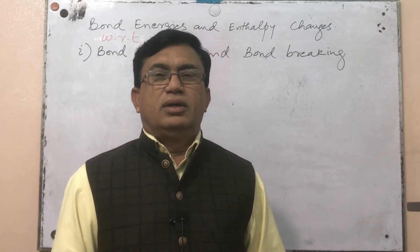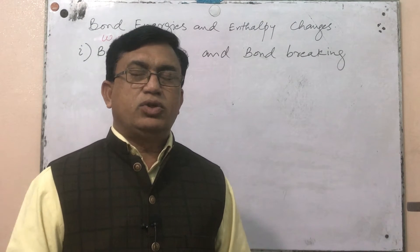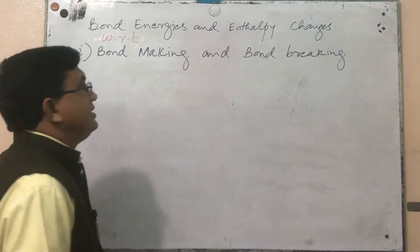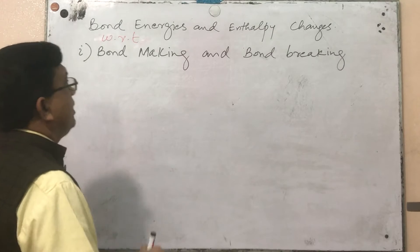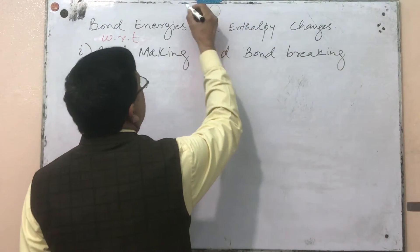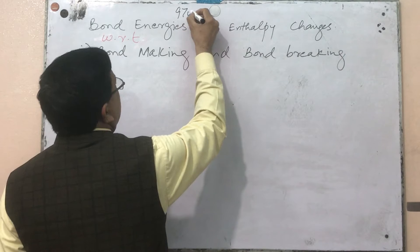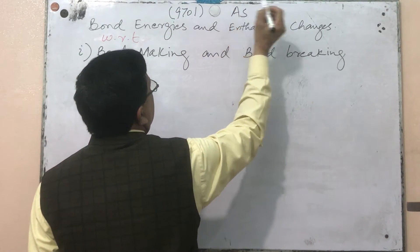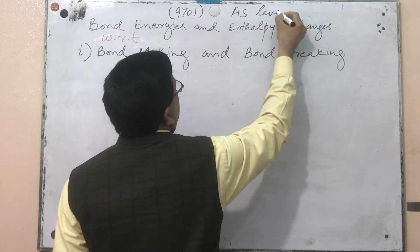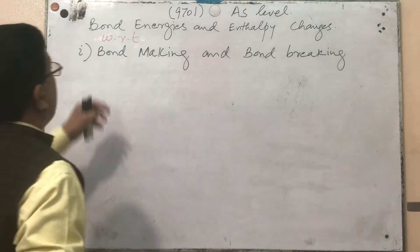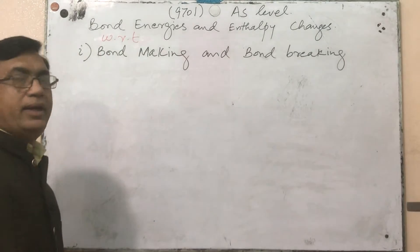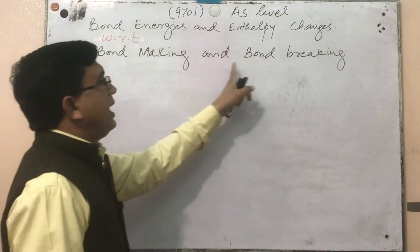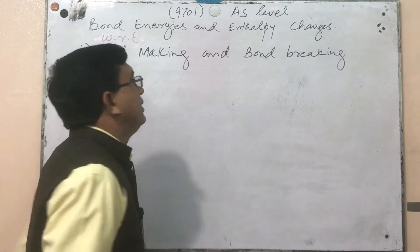Hello everyone. Today's topic for Chemistry A Level 9701 AS class is bond energies and enthalpy changes with respect to bond making and bond breaking.